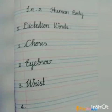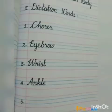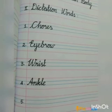Third dictation word is Wrist. Wrist means the joint connecting the hand. Spell: W-R-I-S-T. Fourth dictation word is Ankle. Ankle means the joint connecting the foot and leg. Spell: A-N-K-L-E. Ankle.